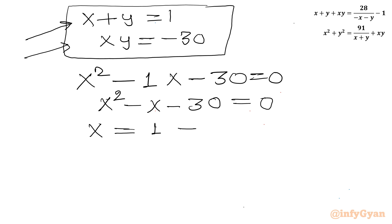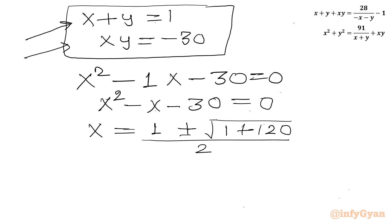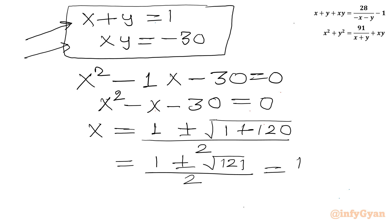Using the quadratic formula: x equals negative b, so 1, plus or minus the square root of b squared minus 4ac, which is 1 plus 120, all divided by 2. So x equals (1 plus or minus square root of 121) over 2, which is (1 plus or minus 11) over 2. With the plus sign: 12 over 2 equals 6. With the minus sign: negative 10 over 2 equals negative 5.